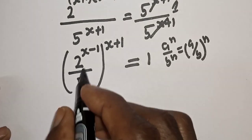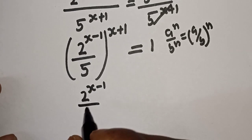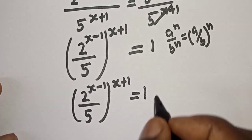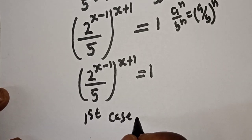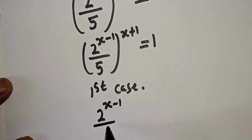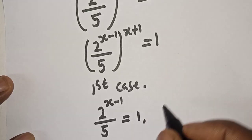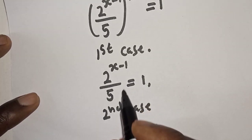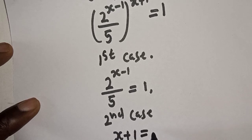By rewriting this, we have (2 over 5) raised to power (s minus 1) over (s plus 1) is equal to 1. There are two cases here. The first case: 2 raised to power (s minus 1) over 5 is equal to 1. The second case: s plus 1 is equal to 0.